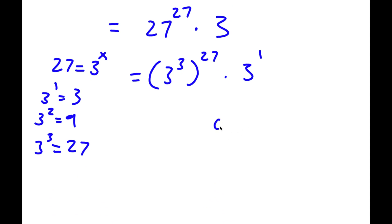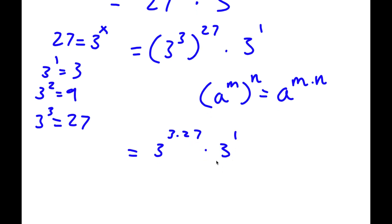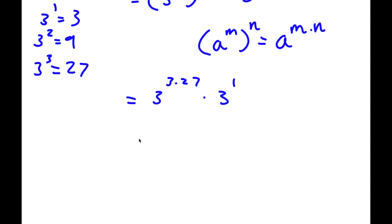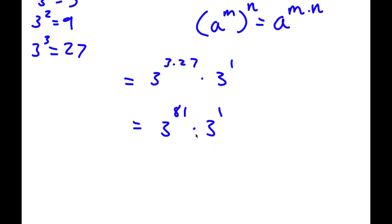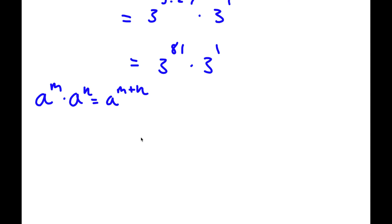Now, if I have something in the form a to the power of m to the power of n, this is equal to a to the power of m times n. So 3 to the power of 3 to the power of 27 equals 3 to the power of 3 times 27, times 3 to the power of 1. And 3 times 27 is 81, so I have 3^81 times 3^1. Now if I have a^m times a^n, this equals a to the power of m plus n. So 3^81 times 3^1 equals 3 to the power of 81 plus 1, which is 3^82. So this is my answer.